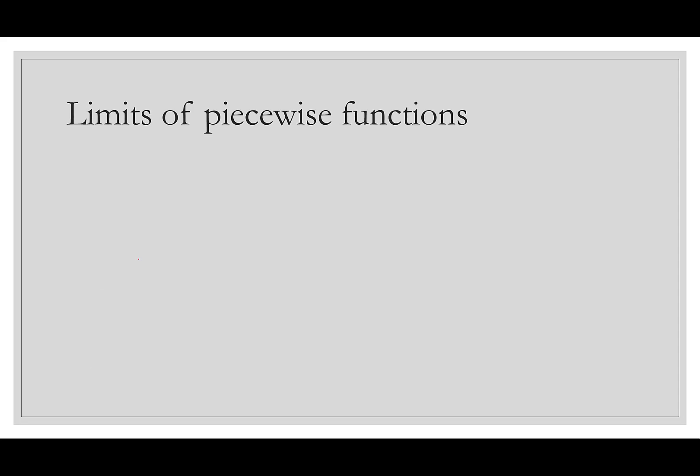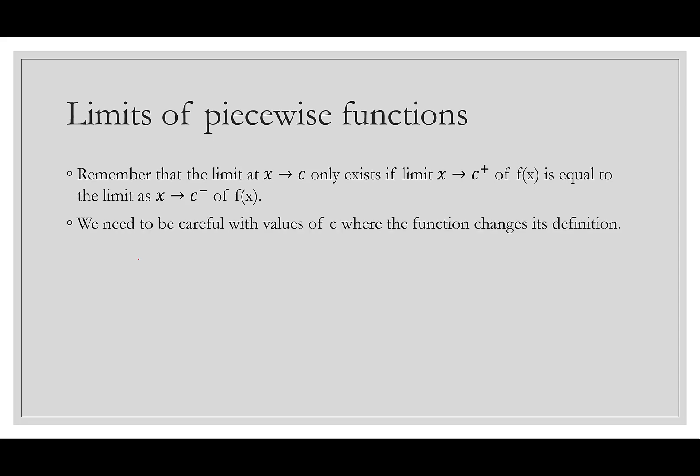Now we're ready to talk about limits of piecewise functions. Remember that the limit as x goes to c only exists if the limit as x goes to c from the positive side of f(x) equals the limit as x goes to c from the negative side of f(x). So as we look at these parts, we need to make sure that both things are the same. We want to be careful with the values of c where the function changes its definition. So if I see like the 18 we had earlier that's in two parts, we need to check both pieces. We want to make sure the positive side and the negative side are the same in order for there to be a limit at c.